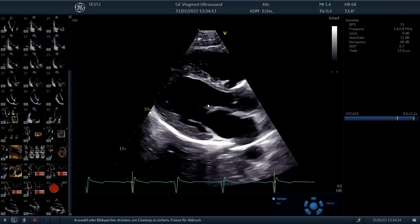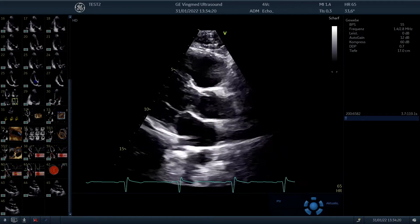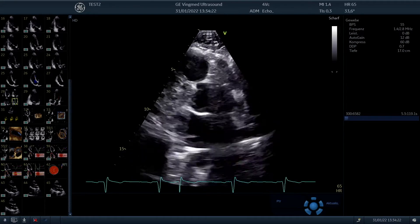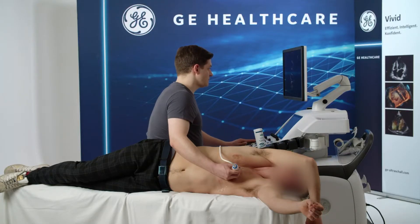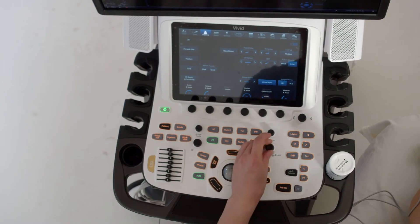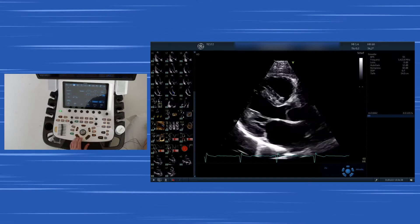We save this image and then we tilt the transducer or we move probably one intercostal space upwards to visualize the ascending aorta even more clearly. Here it is seen on the model and on the knobs you have to use. Always adapt the depth and the gain settings and try to create an optimal image.